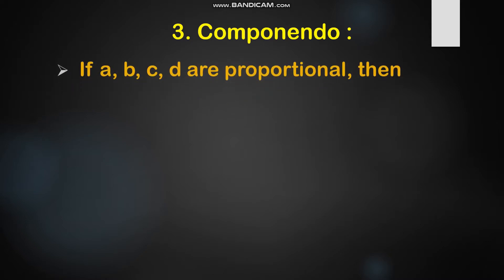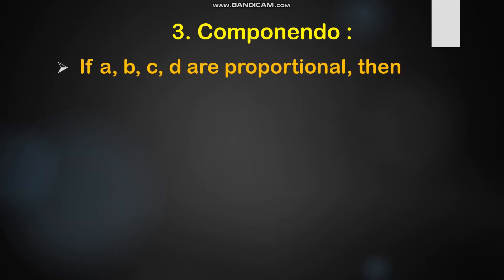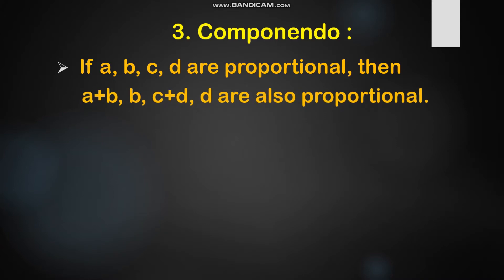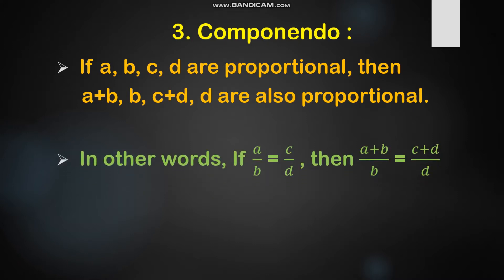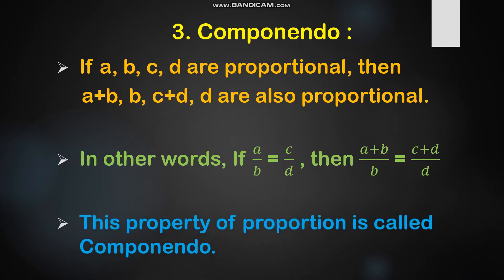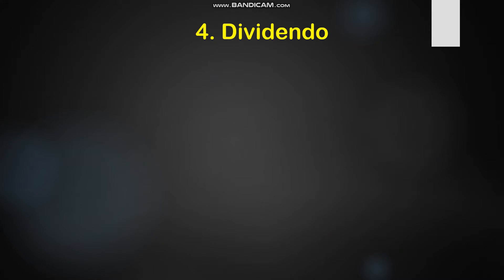The third property is componendo. If A, B, C, D are proportional, then A plus B, B, C plus D, D are also proportional. In other words, if A ratio B is proportional to C ratio D, then A plus B ratio B is proportional to C plus D ratio D. Here, we add the denominator to the numerator. This property is called the componendo property.